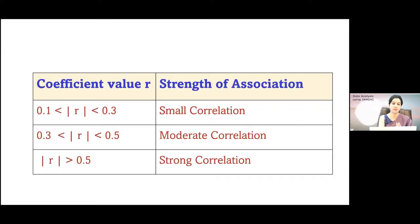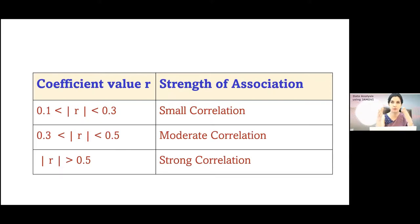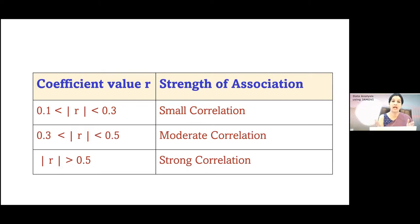We classify the correlation coefficient into three categories: small, moderate, and strong. If the value is between 0.1 and 0.3, it is a small correlation. If the value is between 0.3 and 0.5, it is a moderate correlation. If the value is more than 0.5, it is a strong correlation.